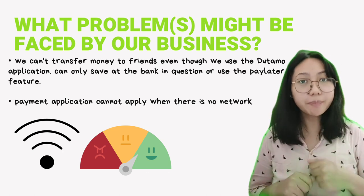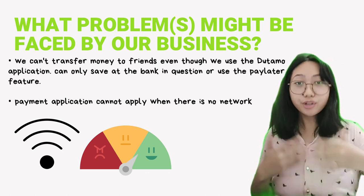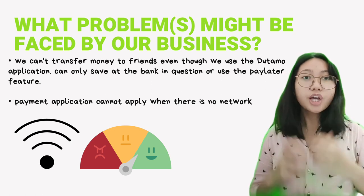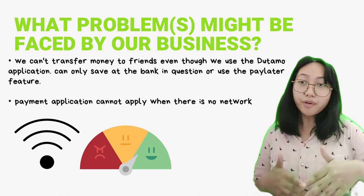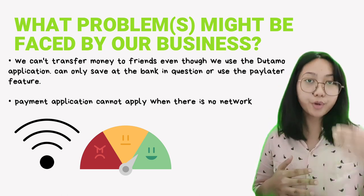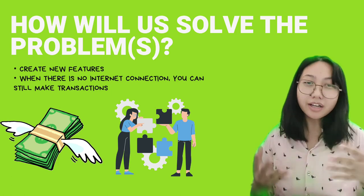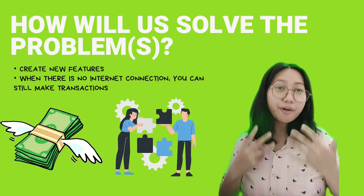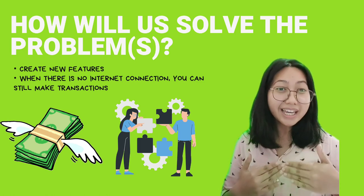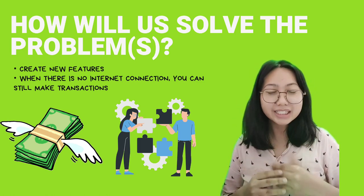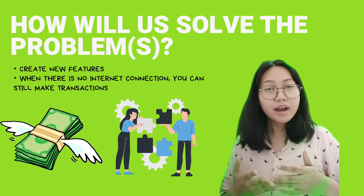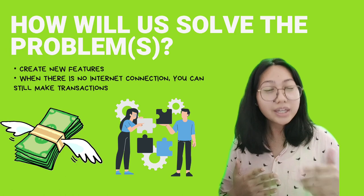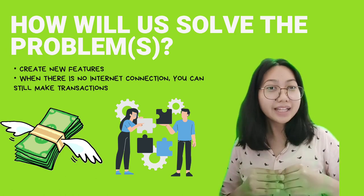What problems might be faced by our business? The first problem is that our users cannot transfer their money to another user through our application — they can only transfer money through a bank. The second problem is that our users cannot do transactions when there is no internet connection. To solve these problems: the first solution is we will make improvements so users can transfer money to another user easily using the DUTAMO application. The next solution is we will develop a new feature where users can still do transactions even without an internet connection, with the bill handled through a pay later feature.